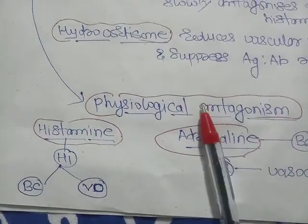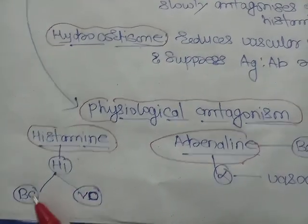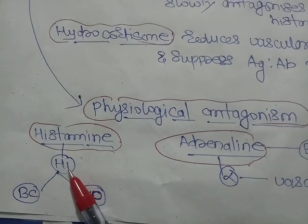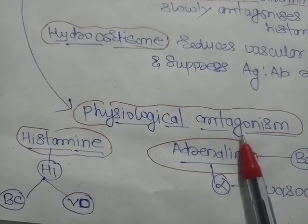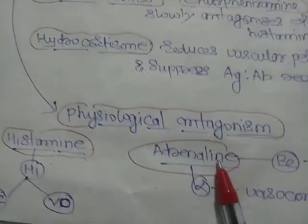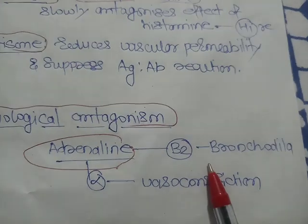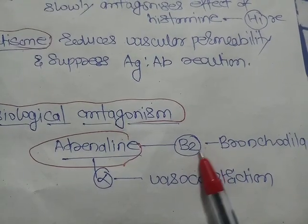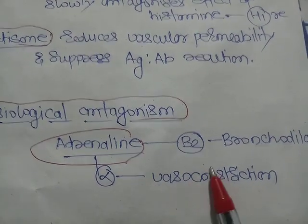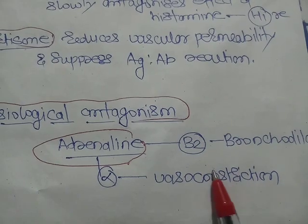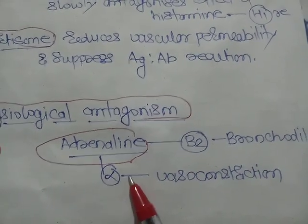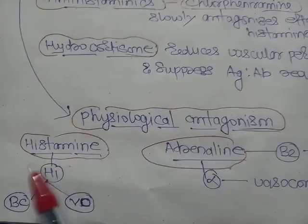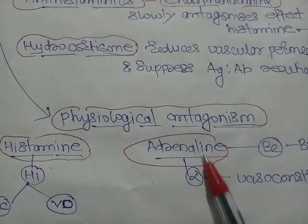Histamine, by acting on H1 receptors, produces vasodilatation and bronchoconstriction. Adrenaline is the physiological antagonist of histamine: by acting on beta-2 receptors it produces bronchodilatation, and by acting on alpha receptors it produces vasoconstriction to raise blood pressure. These two drugs act on two different receptors — histamine on H1, adrenaline on adrenergic receptors.